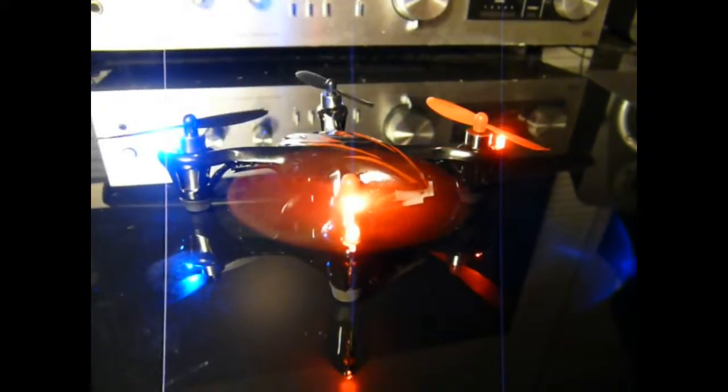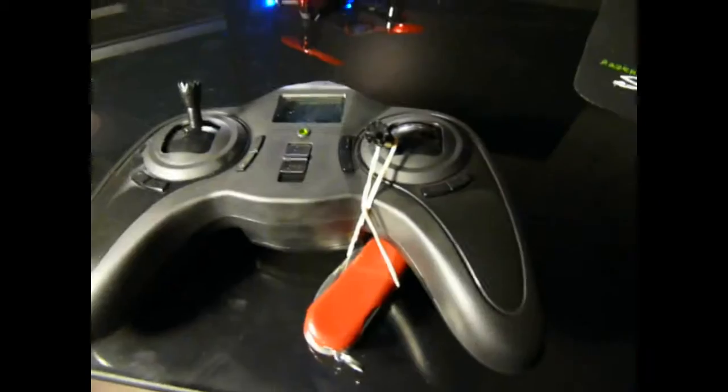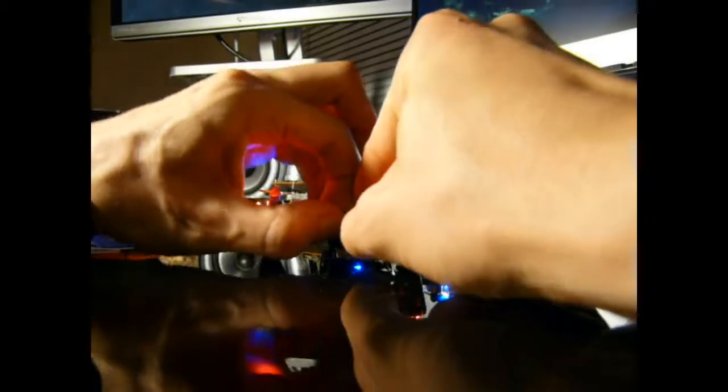This means that you can't set the controller down without the drone trying to take off. It also means that if you want to disconnect the battery to turn the device off, you're going to have to figure out a way of holding down the right analog stick to the 0% position, otherwise you're going to get whacked by the propellers.